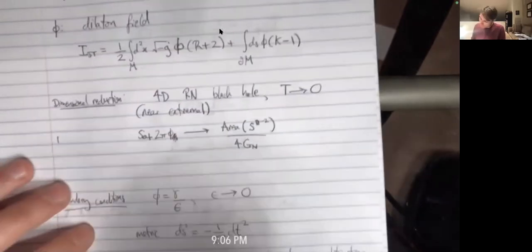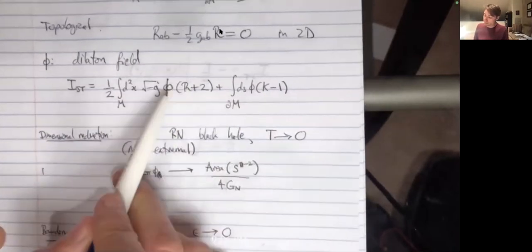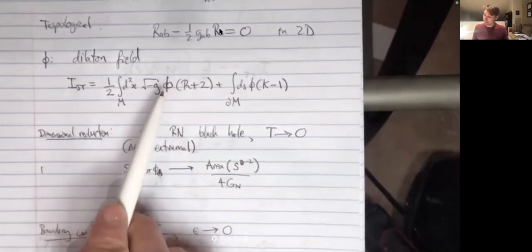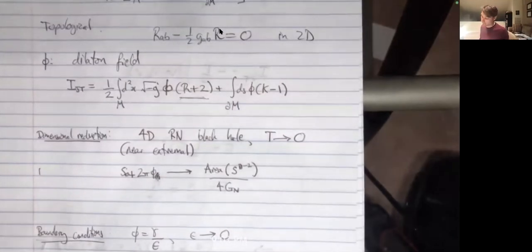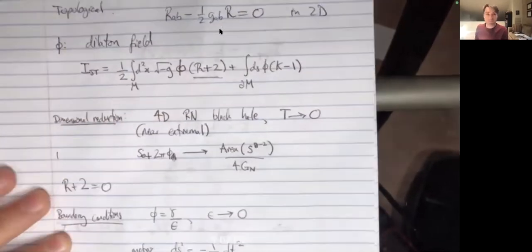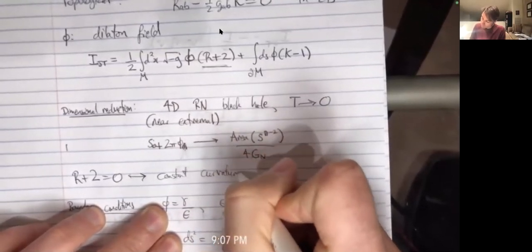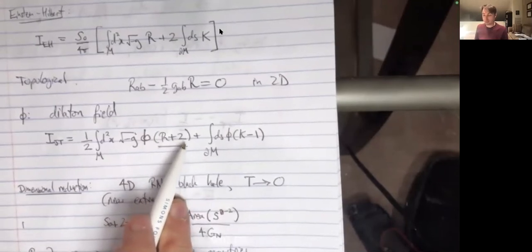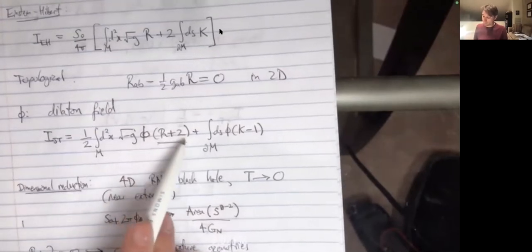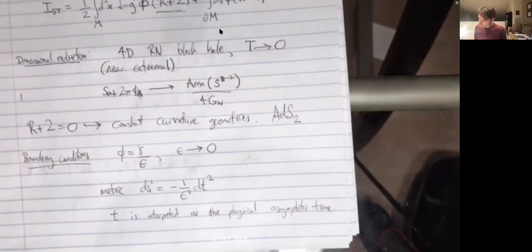The first comment about the model is why it's very simple: the dilaton appears linearly only and has no kinetic terms, making it an auxiliary field — a Lagrange multiplier. What it enforces is that whatever it multiplies must vanish, giving the constraint R plus 2 equals zero. This means we always focus on constant-curvature geometries. With the cosmological constant chosen to fix the curvature scale, we have negative curvature.